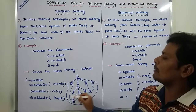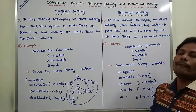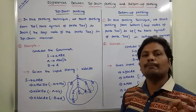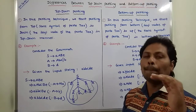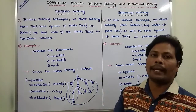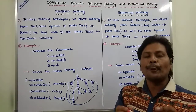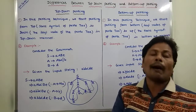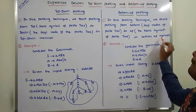This is nothing but top-down parsing. Now we go for bottom-up parsing. In bottom-up parsing, we are starting from the bottom to top in a bottom-up manner. Bottom is nothing but the leaf nodes of the parse tree, and up is nothing but the start symbol of the parse tree.